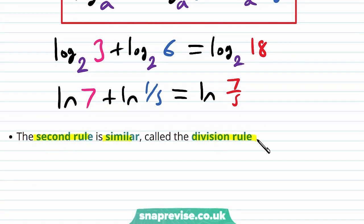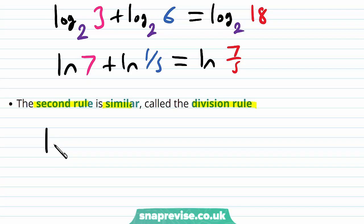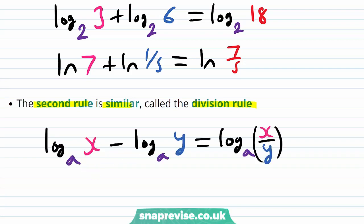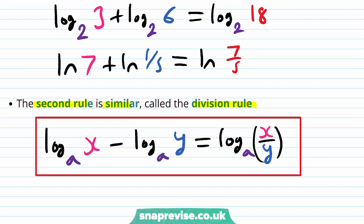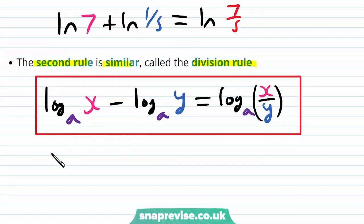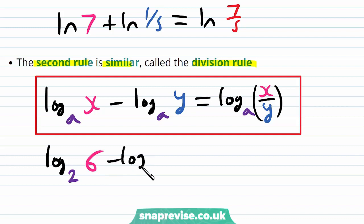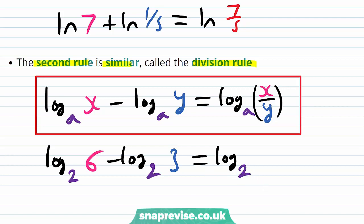The second rule is similar, called the division rule. Namely, the log base a of x minus the log base a of y is equal to the log base a of x over y. This is the division rule. So for example, if we have the log base 2 of 6 minus the log base 2 of 3, this would be equal to the log base 2 of 2, because it's 6 over 3.